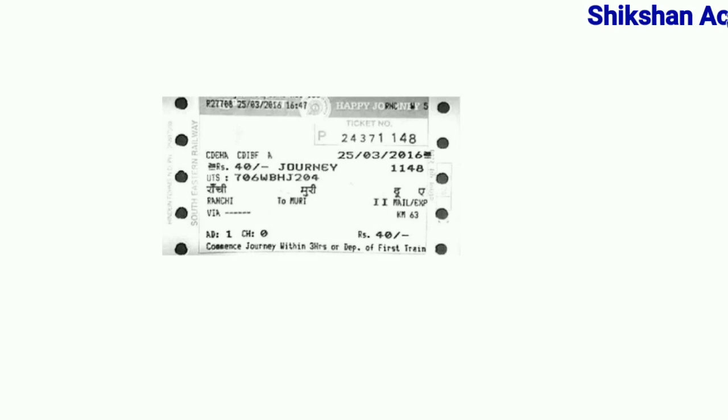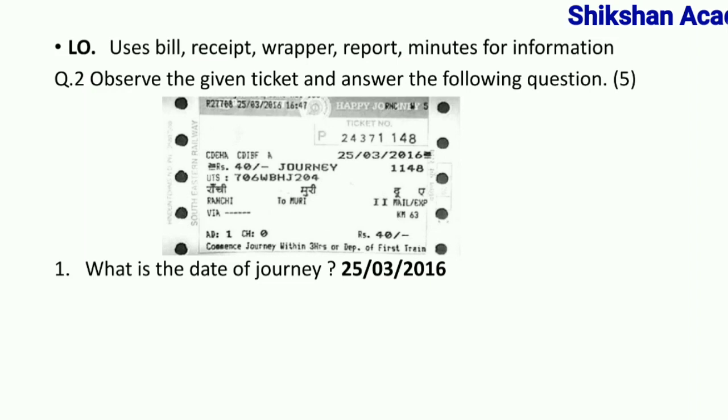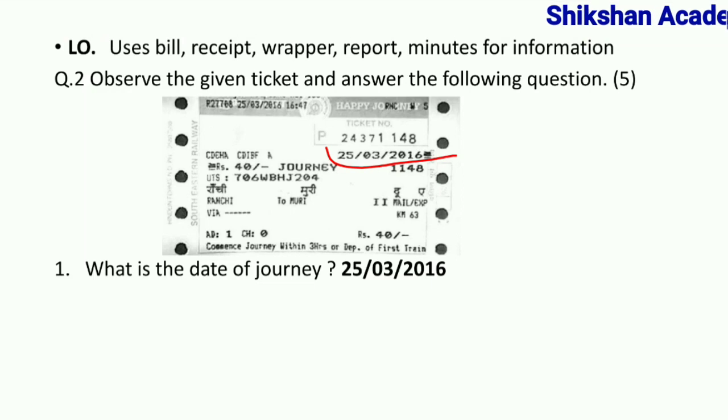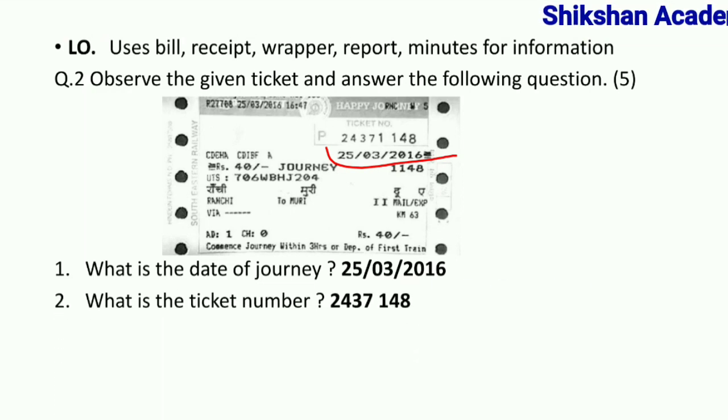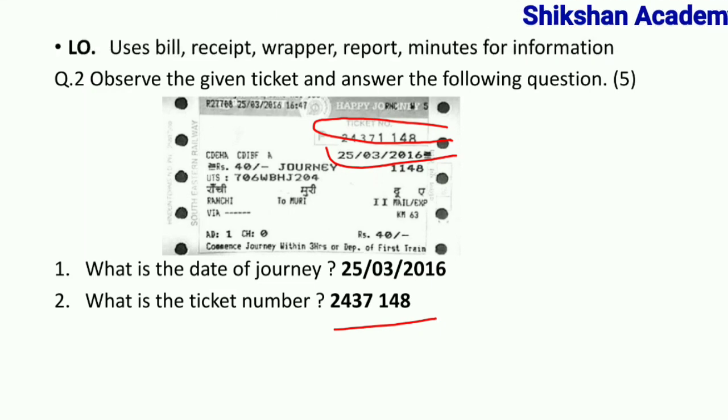Now question number two — इसमें आपको एक ticket दिया गया है। Observe the given ticket and answer the following questions। आपको questions के answers भी write करना है। First पूछा है: what is the date of journey? तो देखो — 25.03.2016 — यह आपका date of the journey। Next: what is the ticket number? Ticket में देखोगे तो आपको ticket number दिखाई देगा — 24371 and 148 — this is your ticket number।